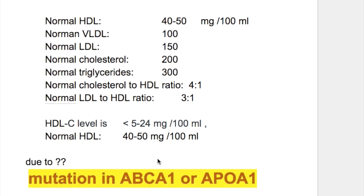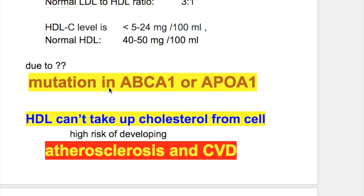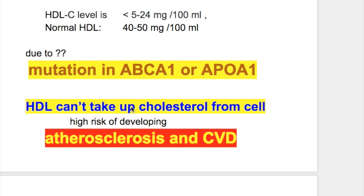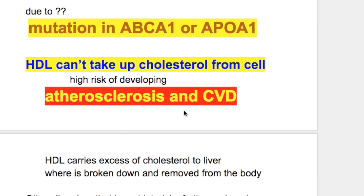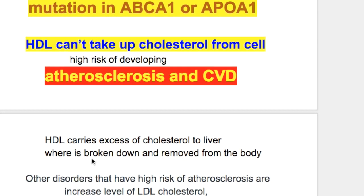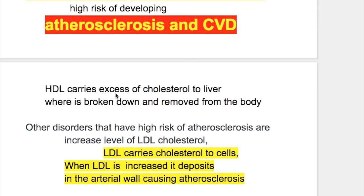Tangier's disease is due to mutation in ABCA1 — ATP binding cassette transporter A1. In Tangier's disease, HDL cannot take up cholesterol from cells, so there is high risk of developing atherosclerosis and cardiovascular diseases. The function of HDL is to carry excess cholesterol to the liver where it is broken down and removed from the body.